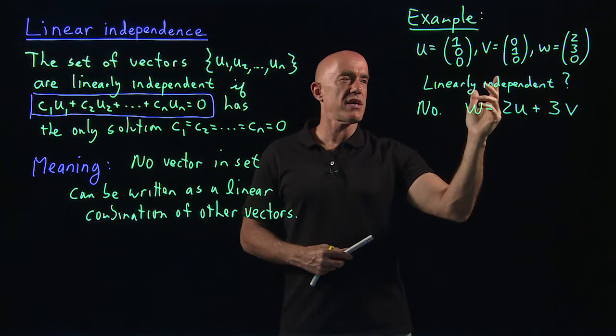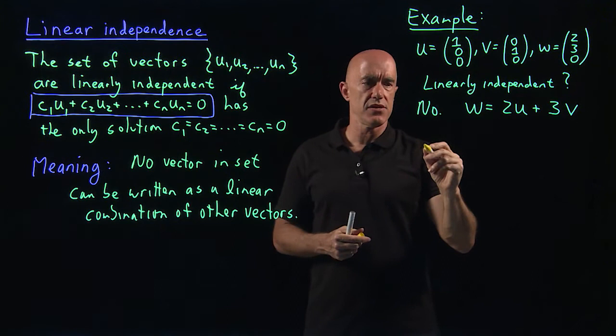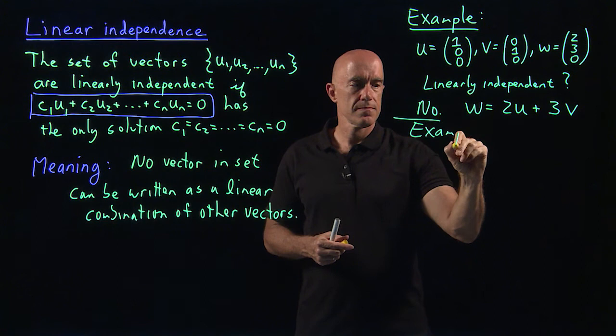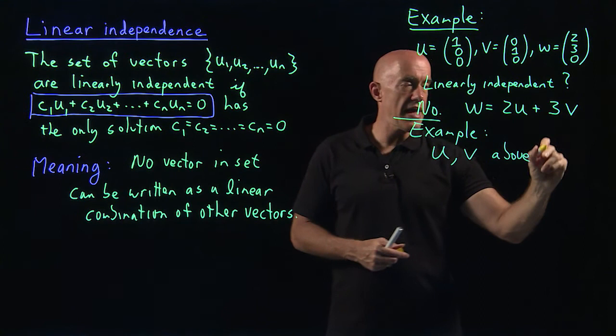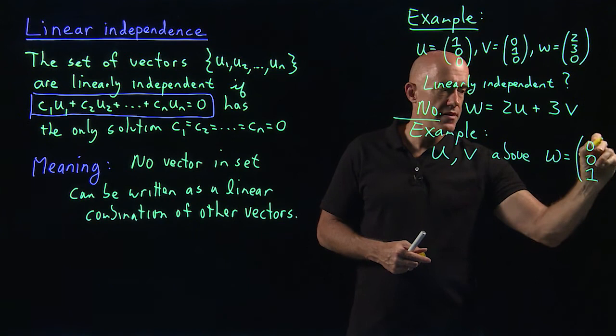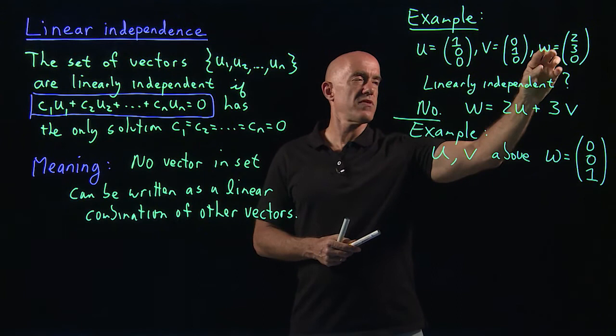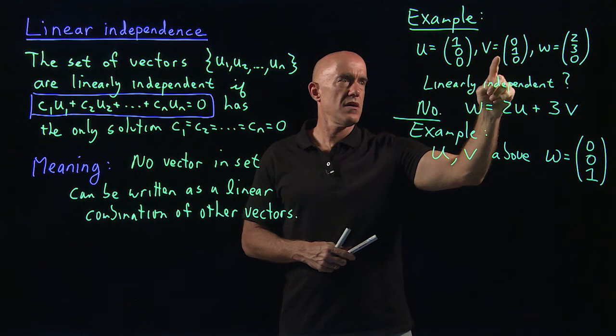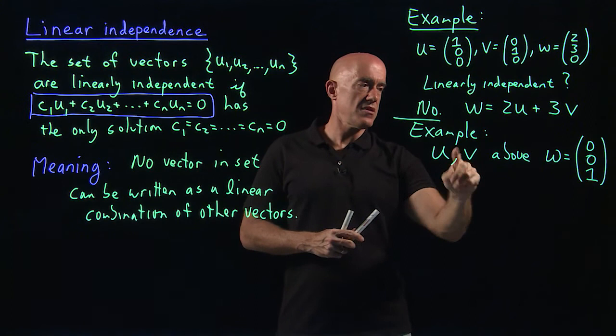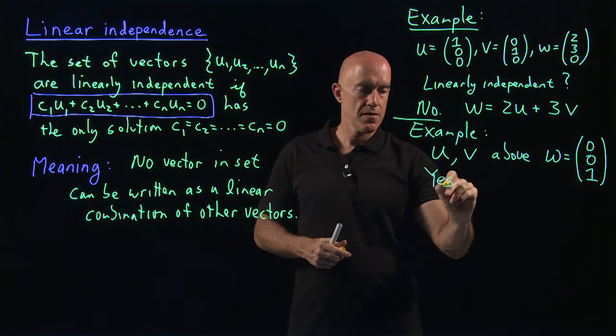How about an example where they are linearly independent? So, another example, we can have U and V as the same vectors above. And now W we take as (0, 0, 1). So, what we've done here now, we've put in W a non-zero third row. Is there any way you can get W from U and V? No, right? So, these are linearly independent. So, yes, linearly independent.